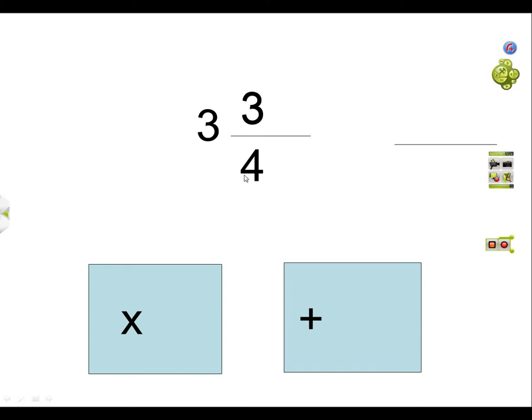I think if you're getting used to this, you can clearly do this in your head. 3 times 4 is 12. Plus 3 is 15. The answer's going to be 15 fourths.